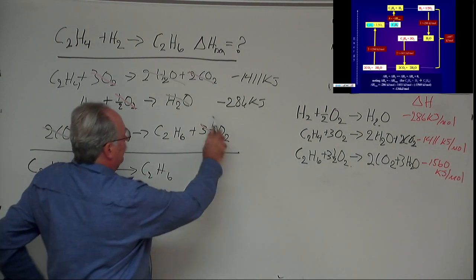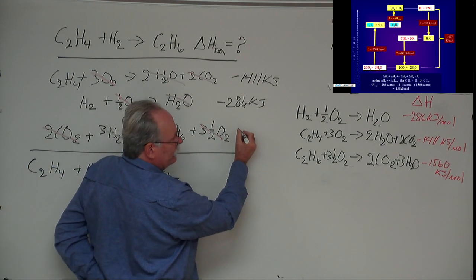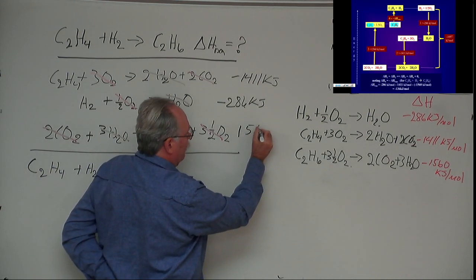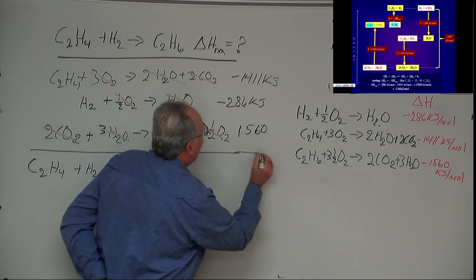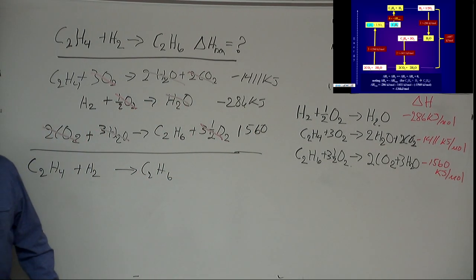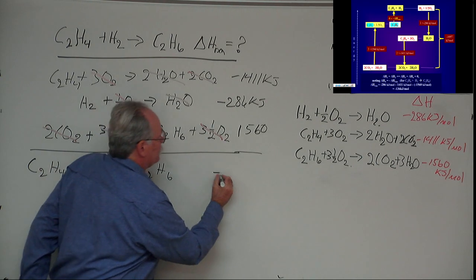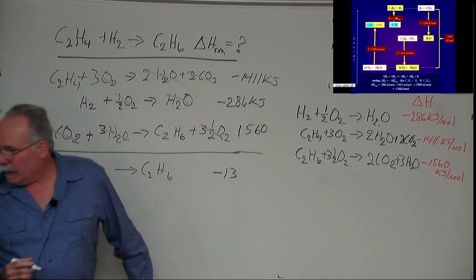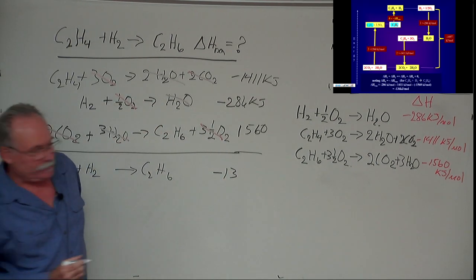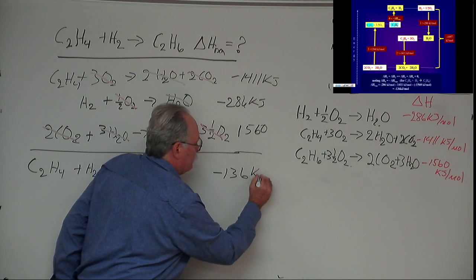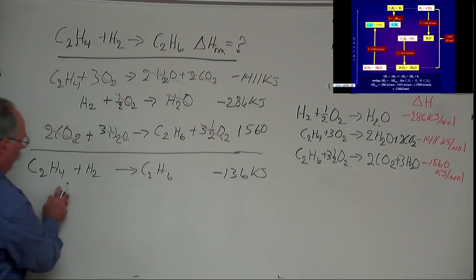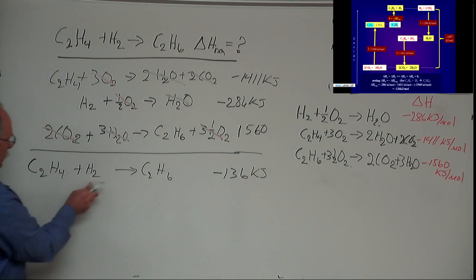Now in this step, because I wrote it backwards, I had to write the energy as a positive 1,560. And so when I add these up, I come up with a value of minus 136 kilojoules. And that's per mole of this, per mole of this, and per mole of this, because the coefficients are all one.